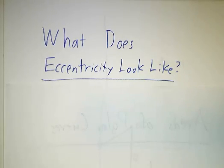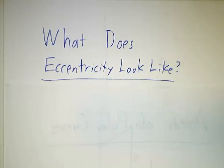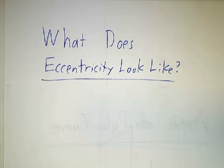The equations for conic sections can get complicated and ugly. In this video, we're going to do something without equations — well, with one equation. We're going to explore what happens to a conic section as the eccentricity grows from 0 to 1 and then past 1.